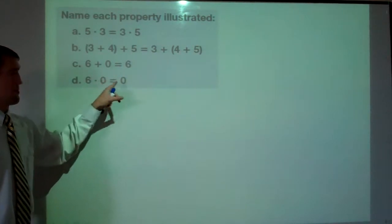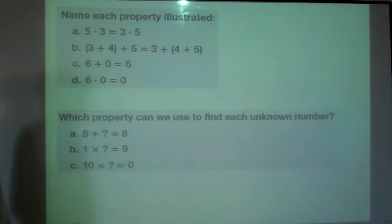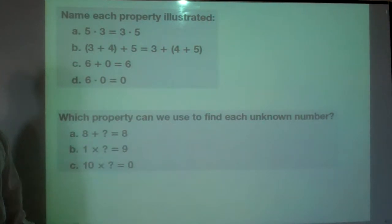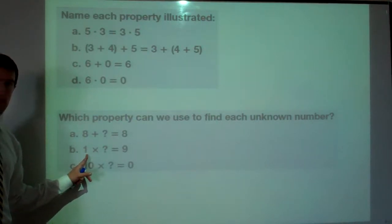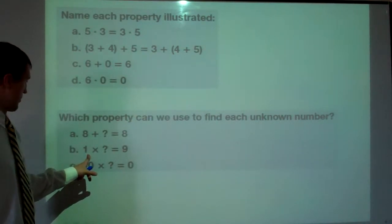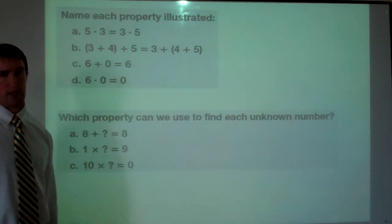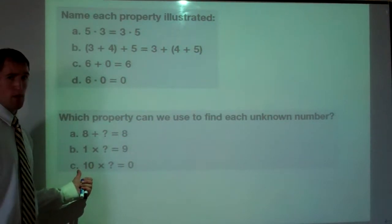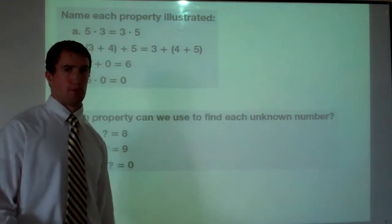Which property can we use to find each unknown number? Eight plus zero gives us eight — that's our additive identity again. One times nine gives us nine — one is our multiplicative identity, because one times nine brings you back to nine. And ten times zero gives us zero — that's our zero property of multiplying.